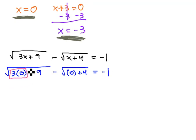Well, this is nice because 3 times 0 is just 0, and 0 here is just 0. So simplifying a bit, we have the square root of 9 minus the square root of 4, and we hope that's equal to negative 1.